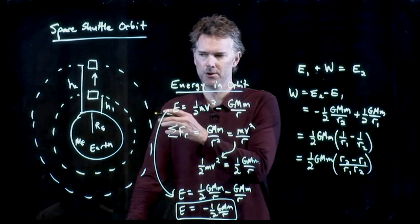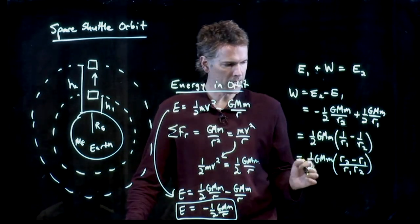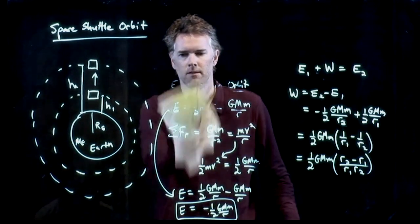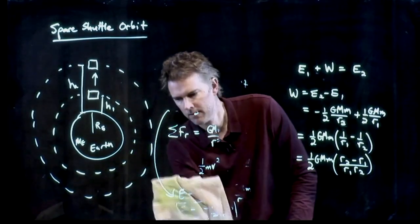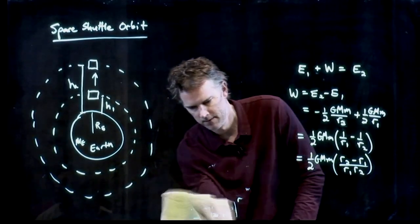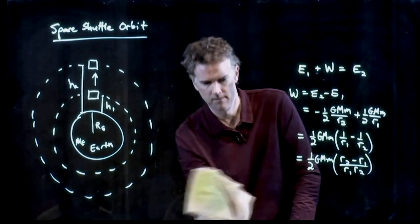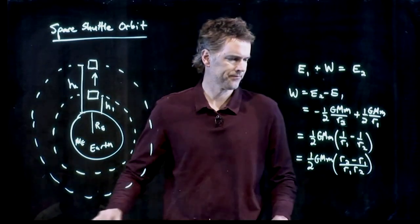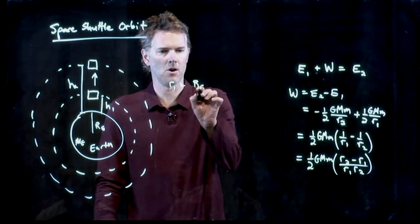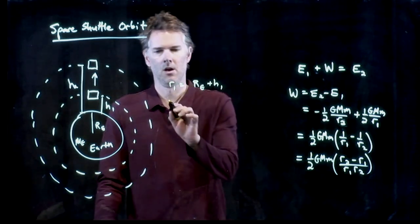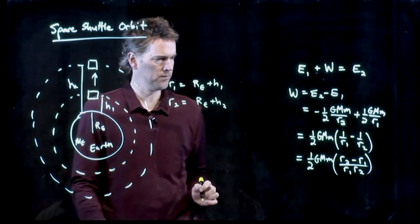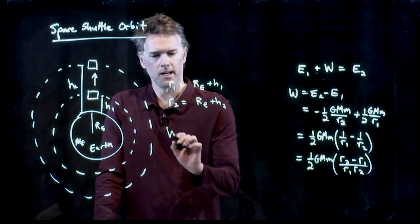But we know what R2 is and we know what R1 is. It's always the distance from the center of the Earth. So R1 is going to be R of the Earth plus H1. R2 is R of the Earth plus H2. And so finally I can calculate the work.